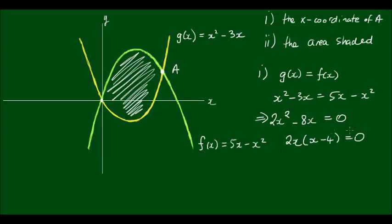And now if I divide both sides of the equation by 2, I see that the 2 on the left-hand side will cancel out, and I'm going to be left with x times x minus 4. So that implies then that x is equal to 0, which we already know because I said at the beginning that the curves intersect at the origin, or x is equal to 4. So therefore the x-coordinate of A is x equals 4. And I will label that on the graph.